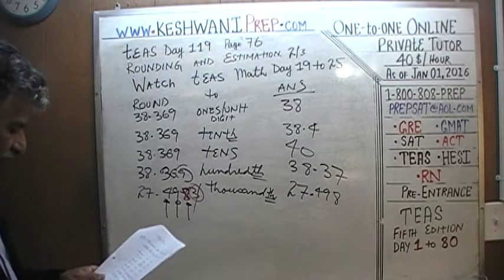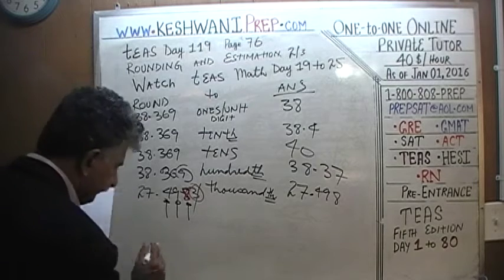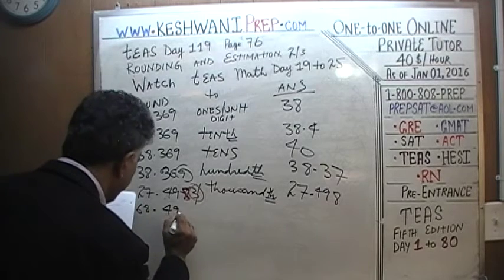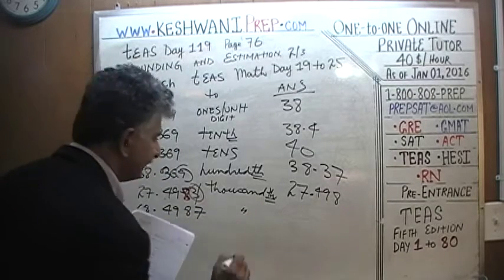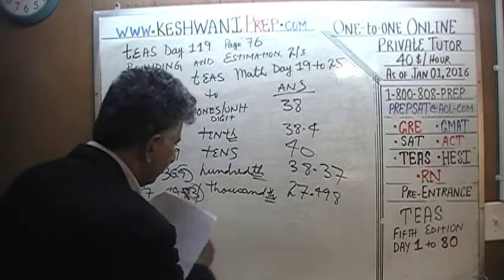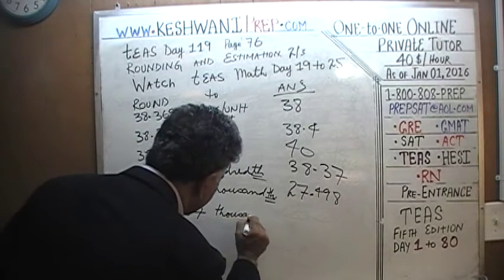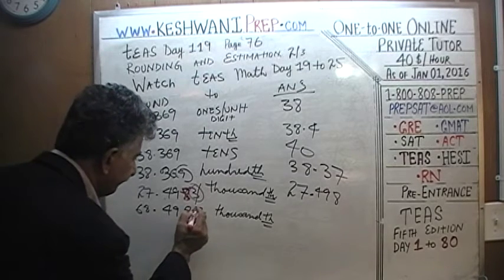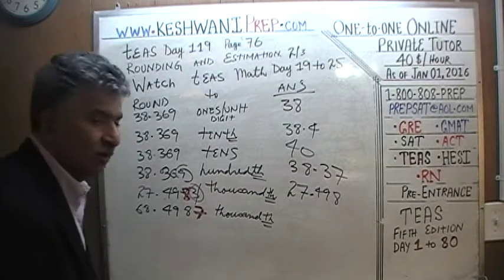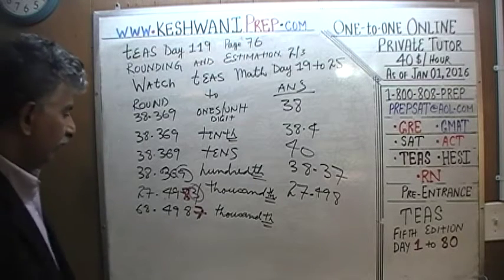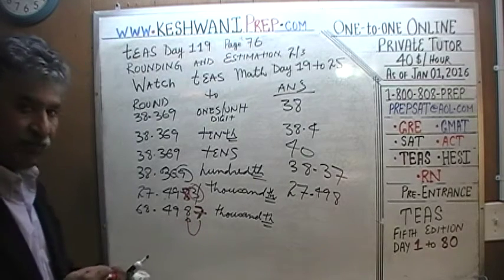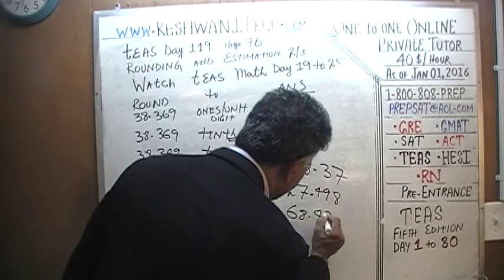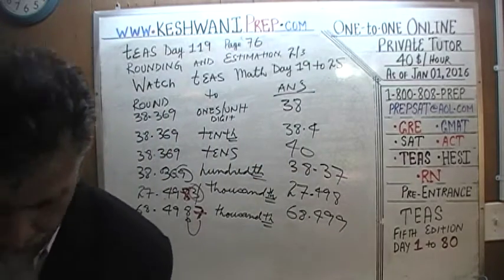How about 68.4987 to the nearest thousandth? The thousandths digit is 8. The ten-thousandths digit is 7, which is equal to or more than 5, so we round up: 8 becomes 9. The answer is 68.499.